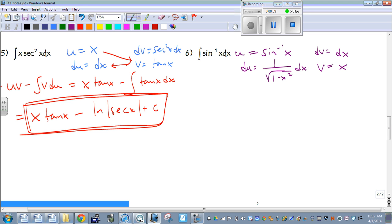So we have the parts we need to set this up. We're going to have u times v minus the antiderivative of v du.